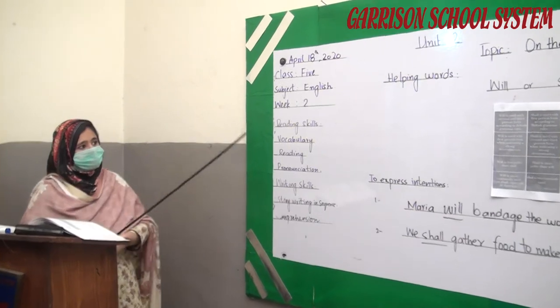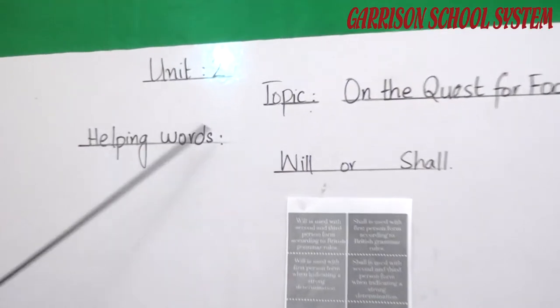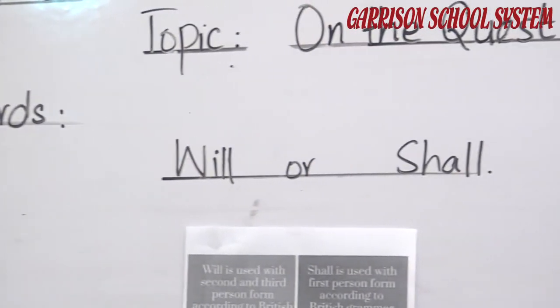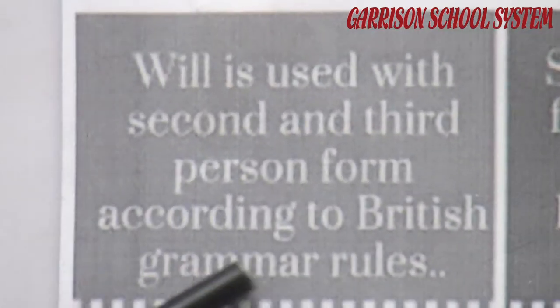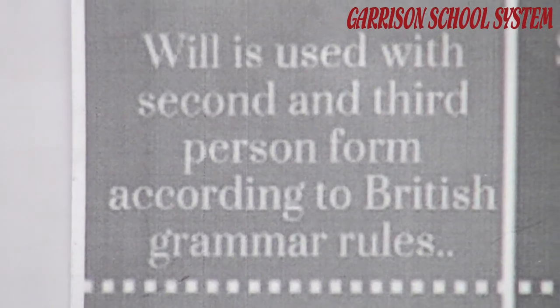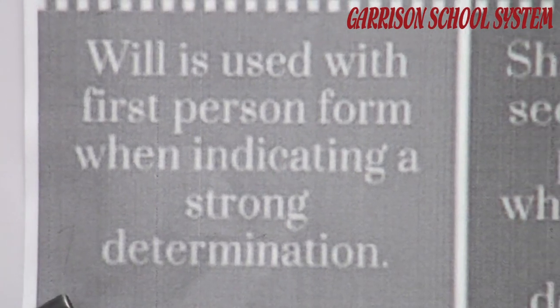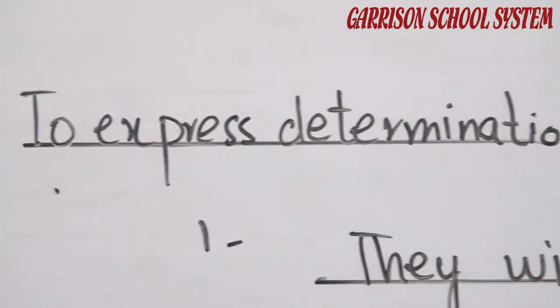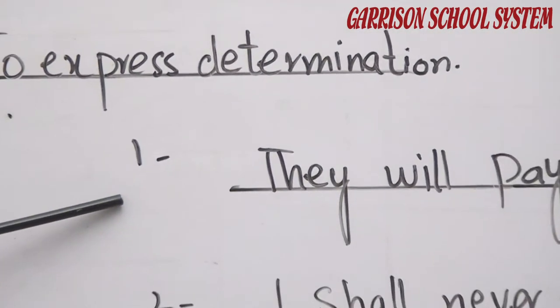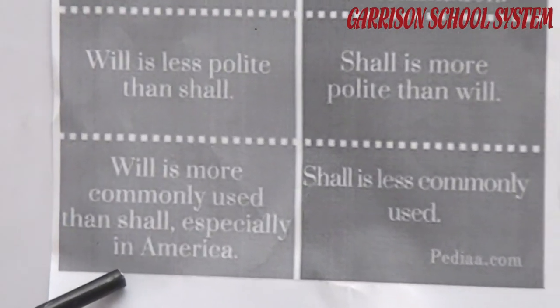Now coming to the grammar, we are going to discuss helping verbs — 'will' or 'shall.' Will is used with the second and third person form according to British grammar rules. Will is also used with the first person form when indicating a strong determination. For example, 'They will pay for this' — this shows the determination of the person speaking. Will is less polite than shall, and will is more commonly used than shall, especially in American English.